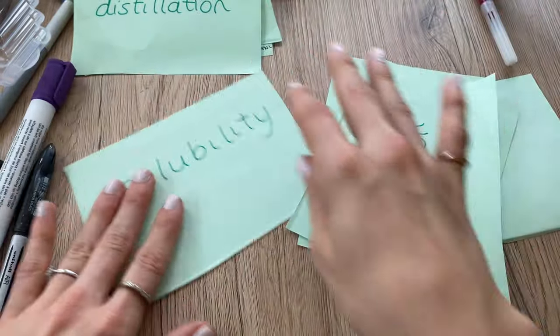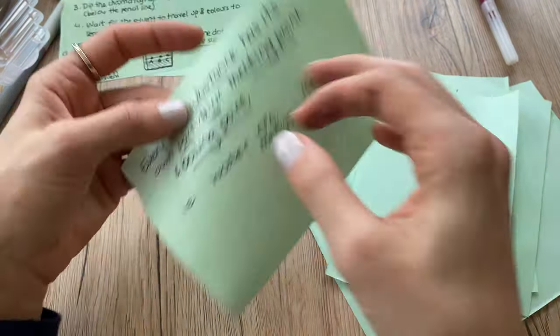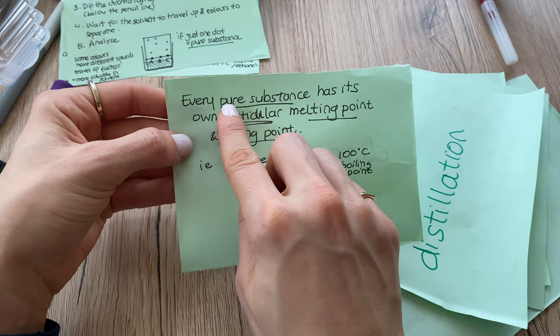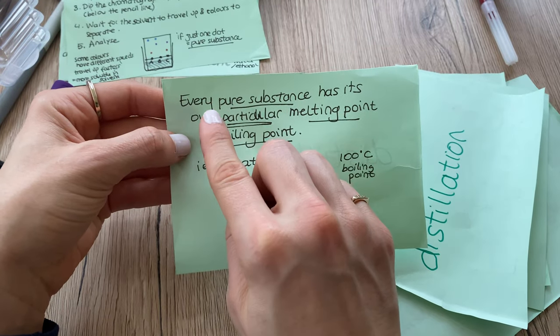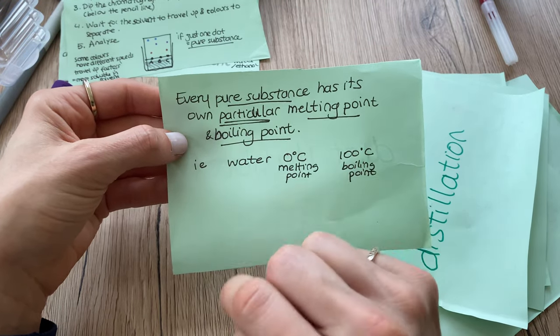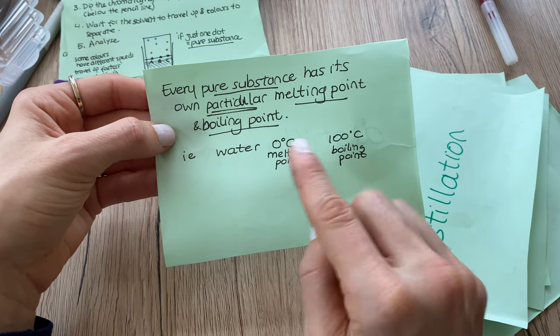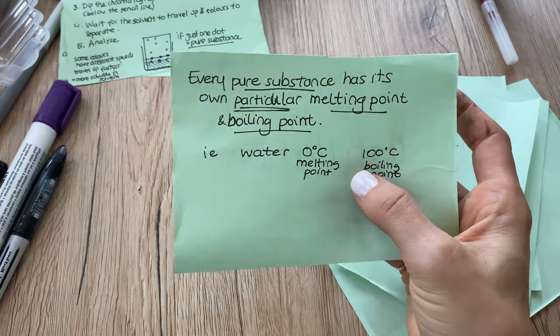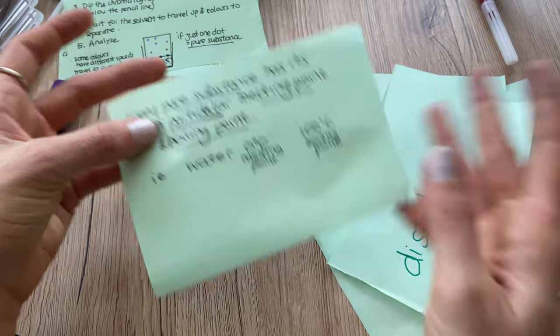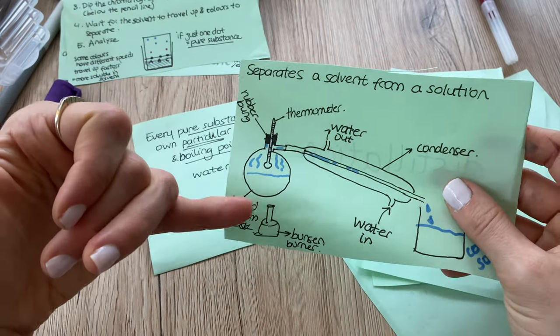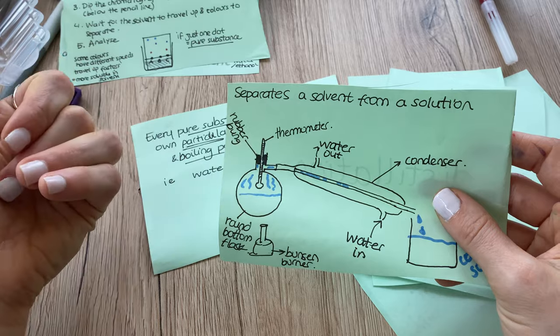That's that, then we've done that and then distillation. We've said that every pure substance has its own particular melting and boiling point, for example, water has zero melting point and boiling point of 100.